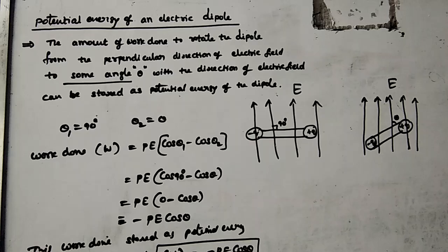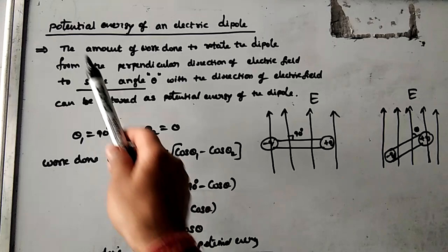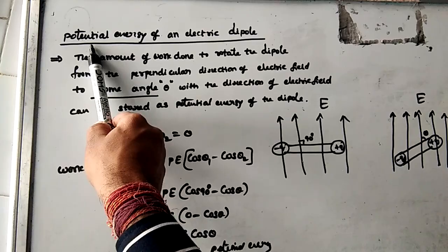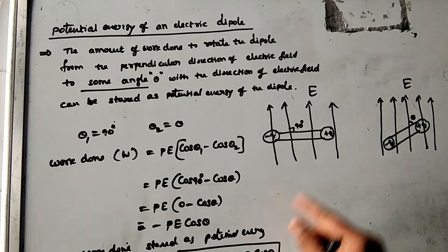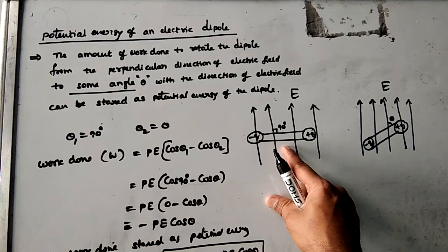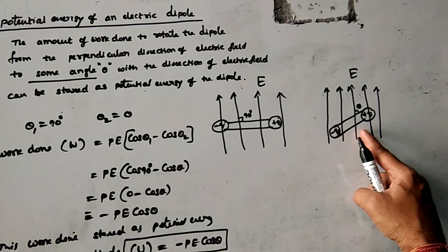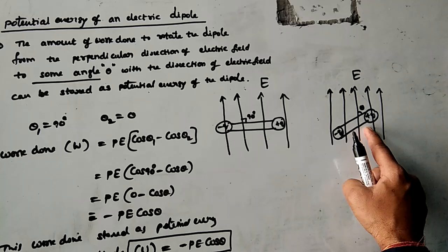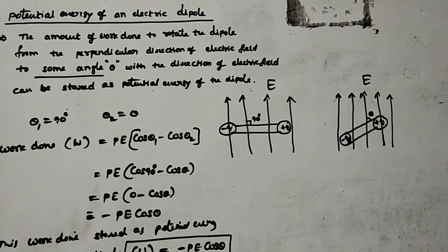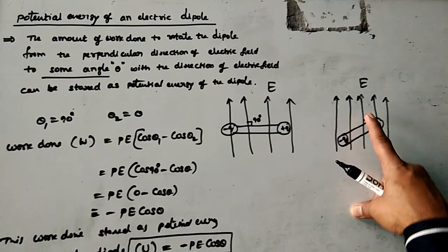Everybody knows potential energy means energy possessed by virtue of its position. So what is the position of the dipole here? Initially the dipole is perpendicular to the electric field. From the perpendicular direction I am turning it through some angle theta, so now the dipole is making an angle theta with the field direction. This is the position of the dipole — by virtue of its position, making an angle theta with the field direction.